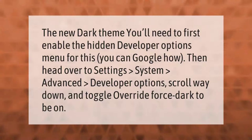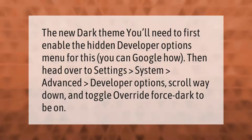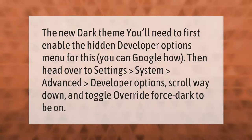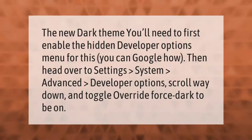For the new dark theme, you'll need to first enable the hidden developer options menu — you can Google how to do this. Then head over to Settings > System > Advanced > Developer Options, scroll way down, and toggle 'Override Force Dark' to on.